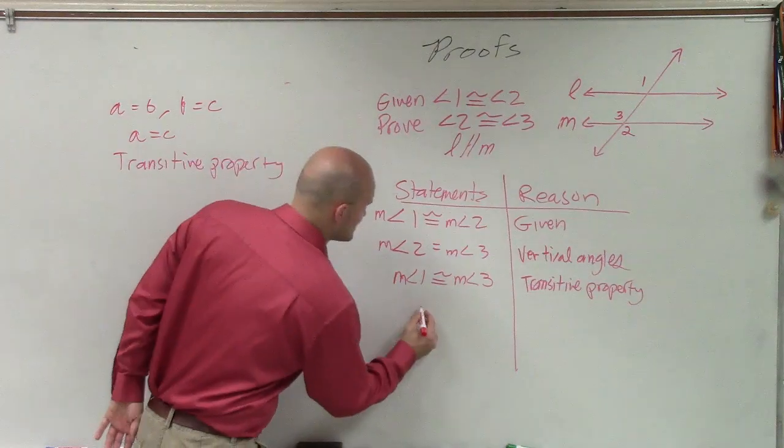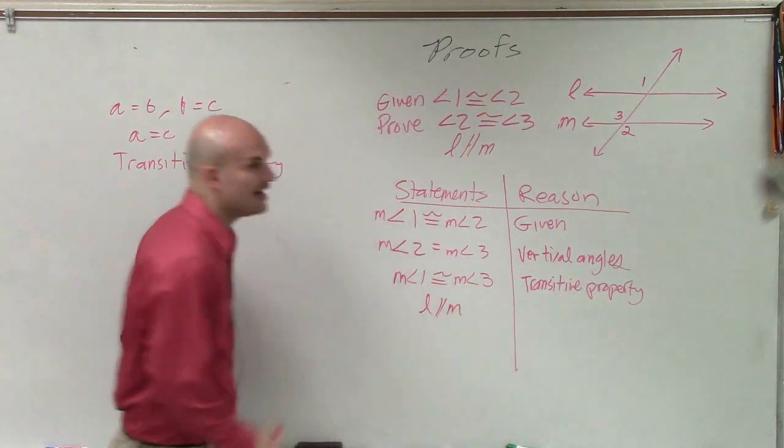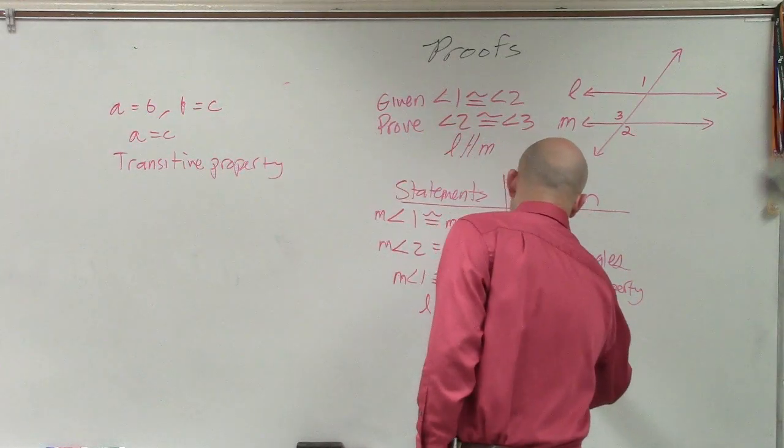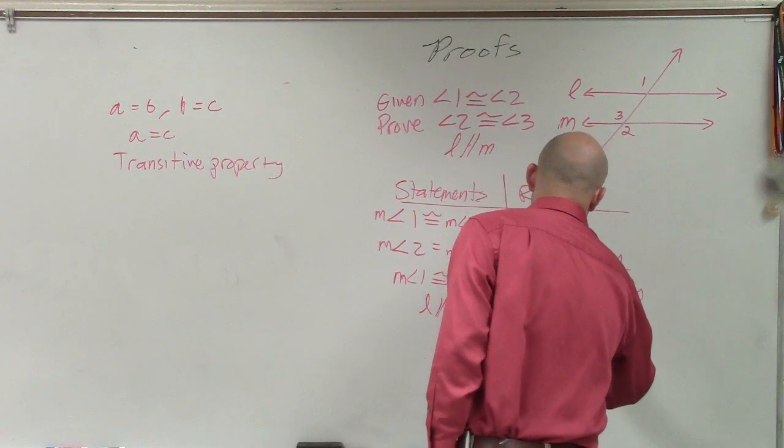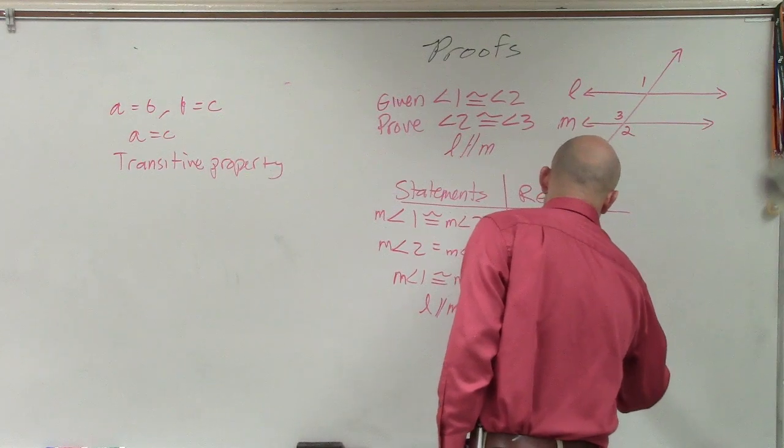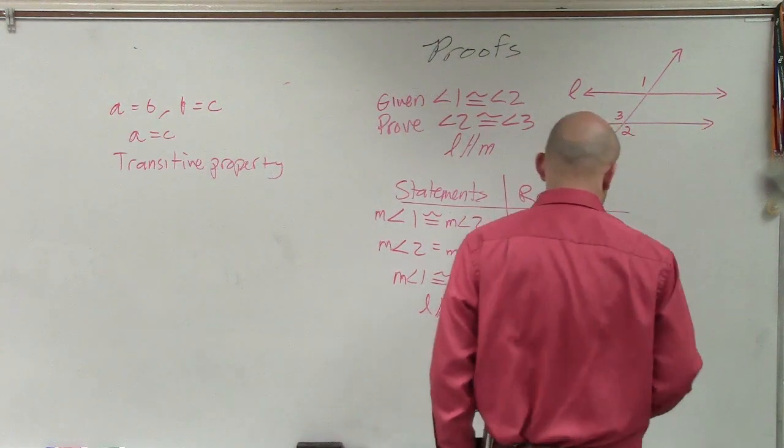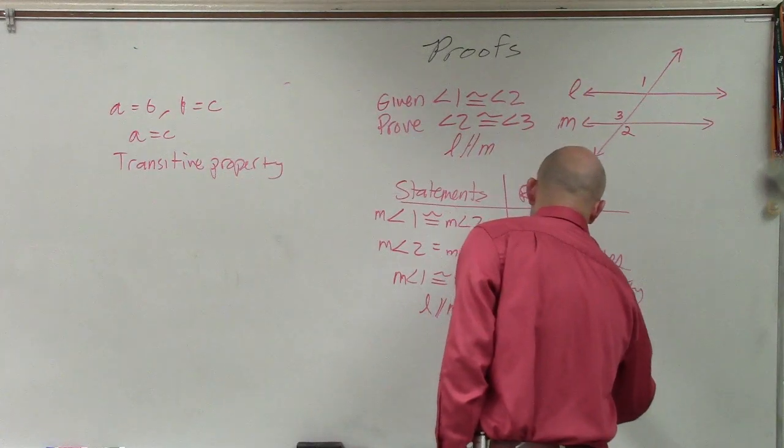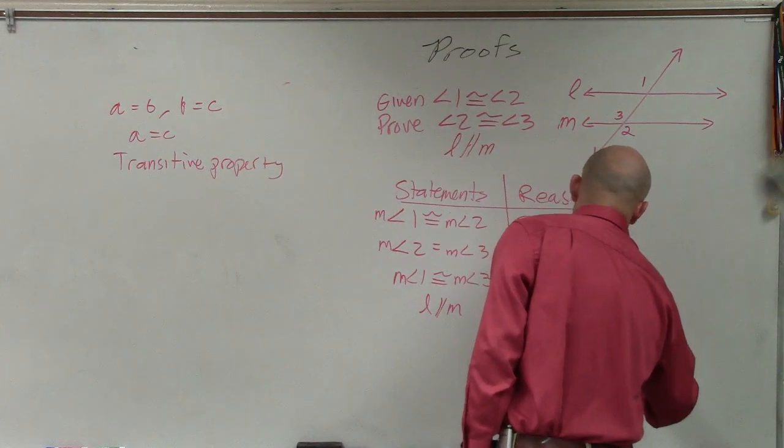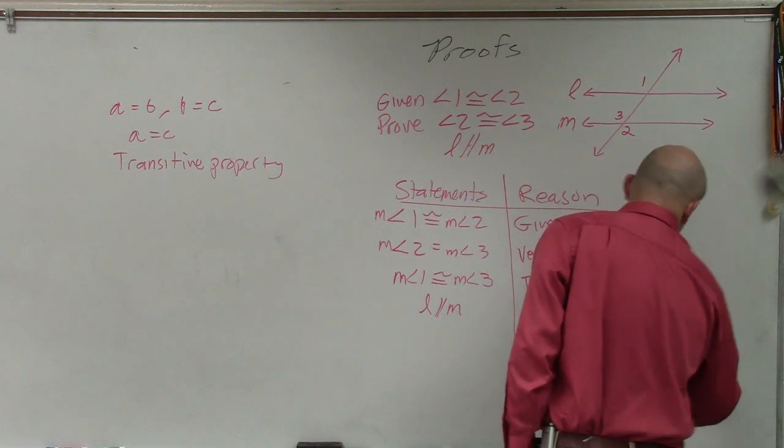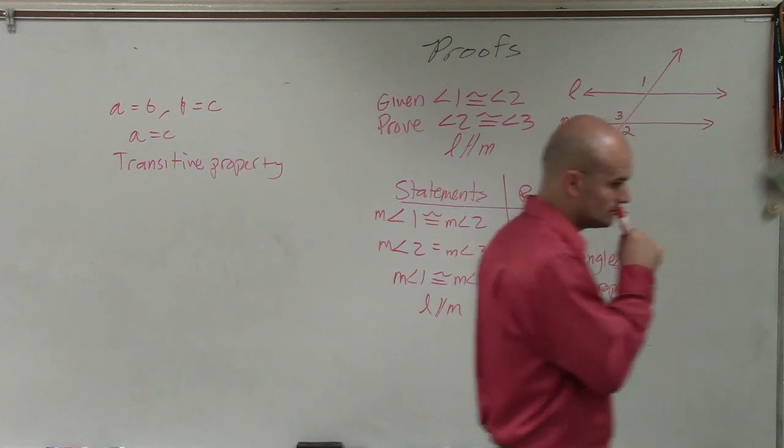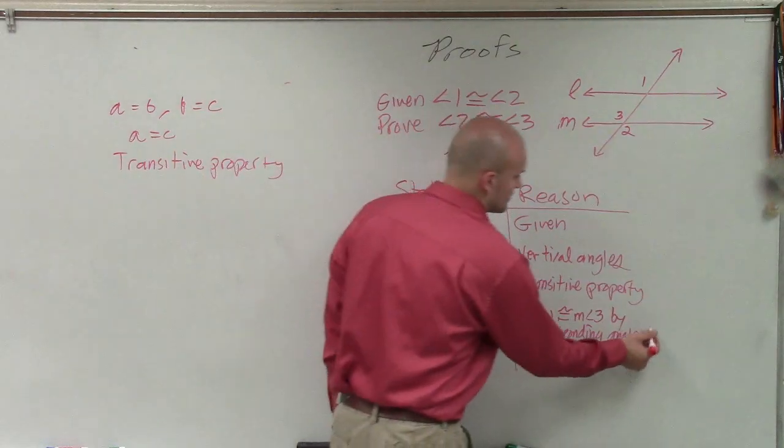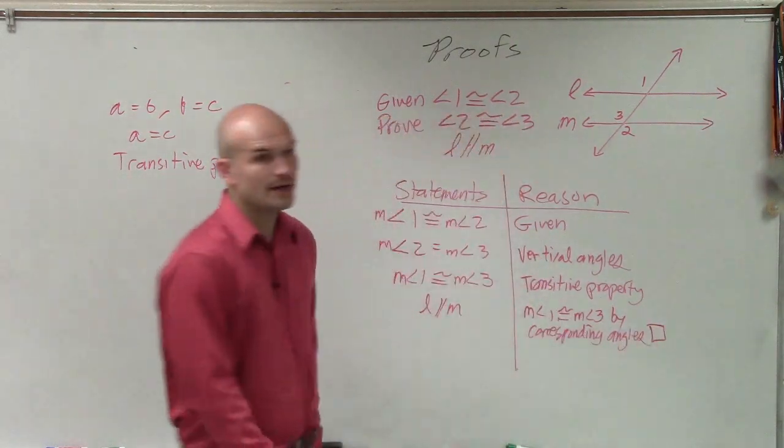So therefore, I can now say L is parallel to M because the measure of angle 1 is congruent to the measure of angle 3 by corresponding angles. All right, there we go, we're done.